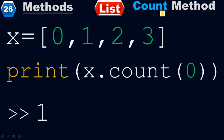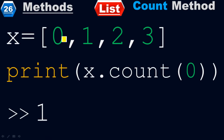Using x dot count of 0 tells us how many zeros we have in the given list. When you run it, you will get only 1, because we have only one 0 in the list. But if we had 0 here and 0 here, then it would return 2. Since we have only one 0, it returns 1.